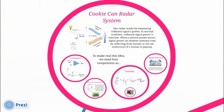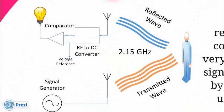Finally, look our cookie-can radar design. For a basic demonstration of remote sensing, we prepared a cookie-can radar. Our radar works by measuring reflected signals power. In normal condition, power at the receiver is very low.